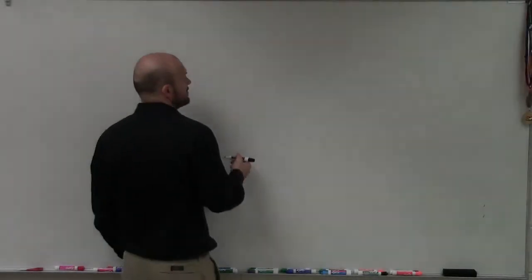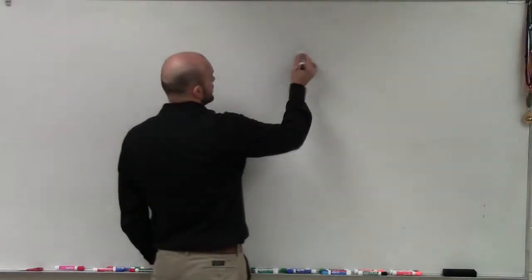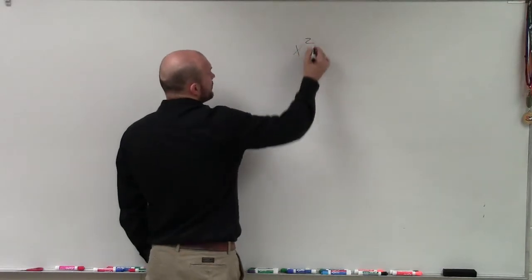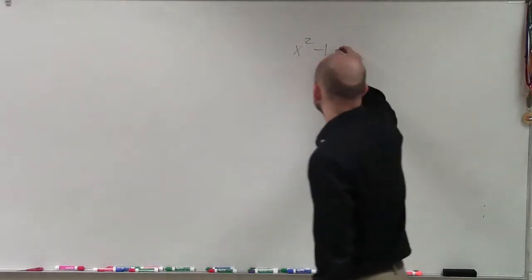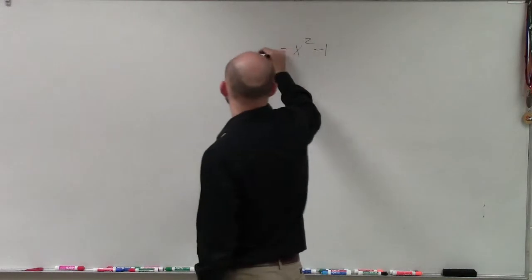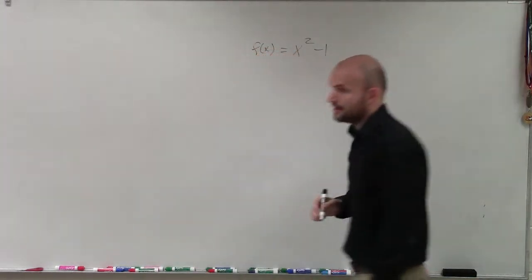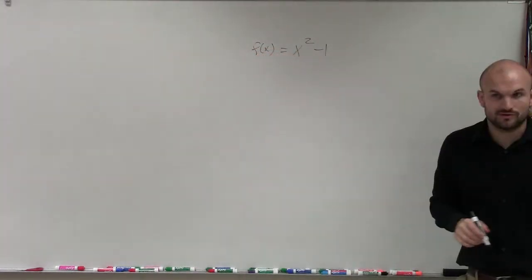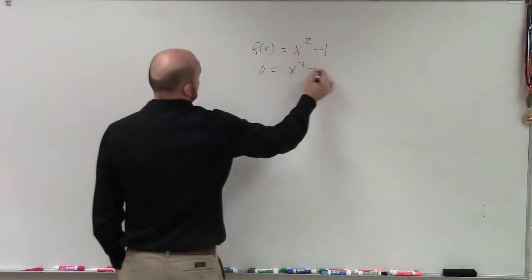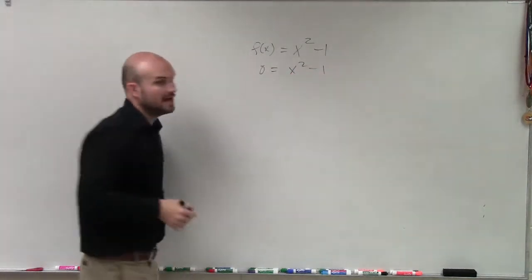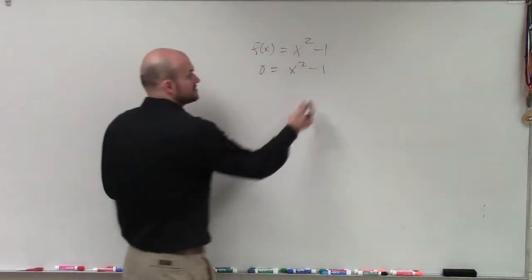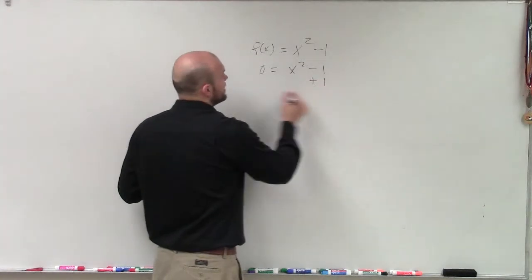Let's do a quick review of complex numbers. Complex numbers come from equations like x squared plus 1 equals 0, and we want to find the zeros. Setting this equal to zero, we can solve it using the square root method — taking the square root of both sides.